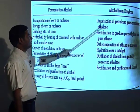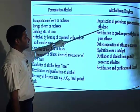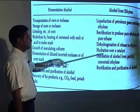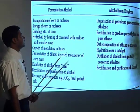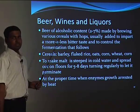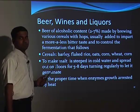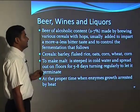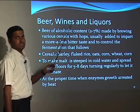For petroleum-derived alcohol, the process involves liquefaction of petroleum gases containing ethylene, then rectification, then dehydrogenation, then distillation and rectification, and curation of the alcohol. After ethanol is produced, diluted or concentrated ethanol at different levels can be classified into beer, wines, and other liquors.